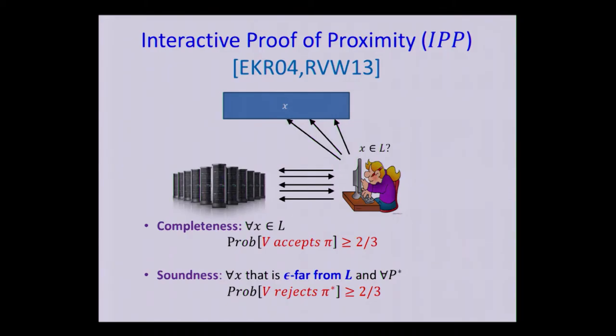And now we have the standard completeness requirement, which says that if X belongs to the language, then Alice will accept, let's say, a high probability. But now instead of saying that Alice needs to reject every false statement, we say that Alice only needs to reject statements that are far, again, in Hamming distance from the language. So if X is epsilon far from the language, no matter what the cheating prover does, it can be computationally unbounded, Alice is going to reject with high probability.